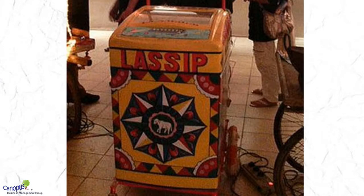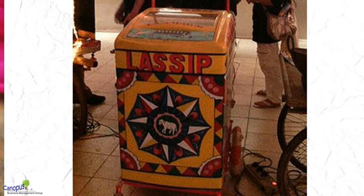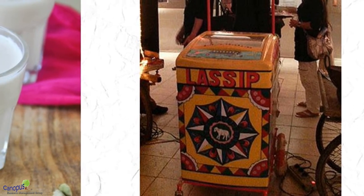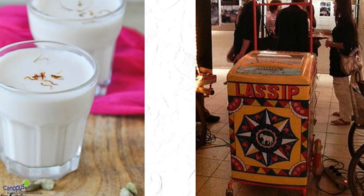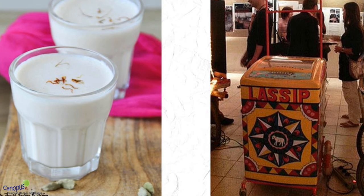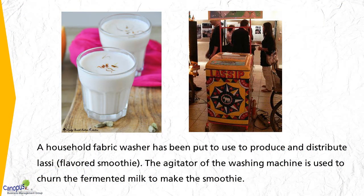In this example, a household fabric washing machine has been put to use to produce and distribute what we call Lassi, which is an Indian flavored smoothie. The agitator of the washing machine is used to churn the fermented milk to make the smoothie. This is one of the most amazing examples of this principle of SCAMPER. A conventional commercial Lassi churner of the same capacity would cost much more than a domestic washing machine.